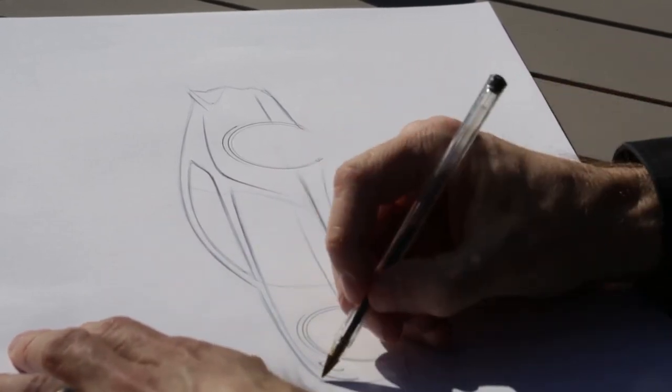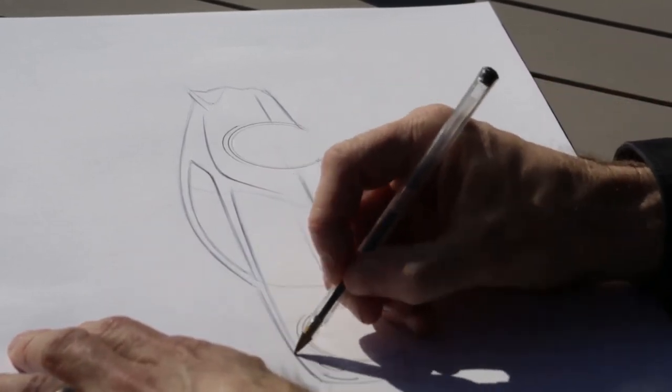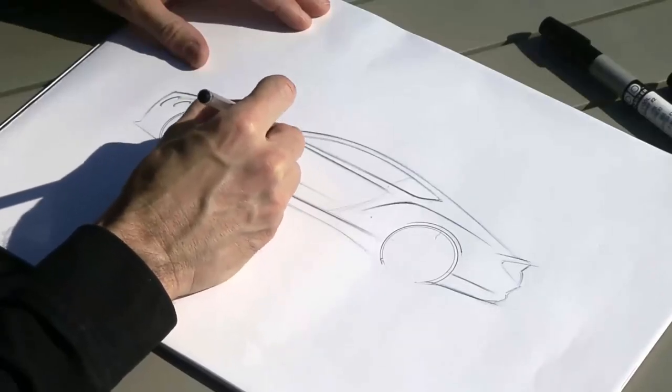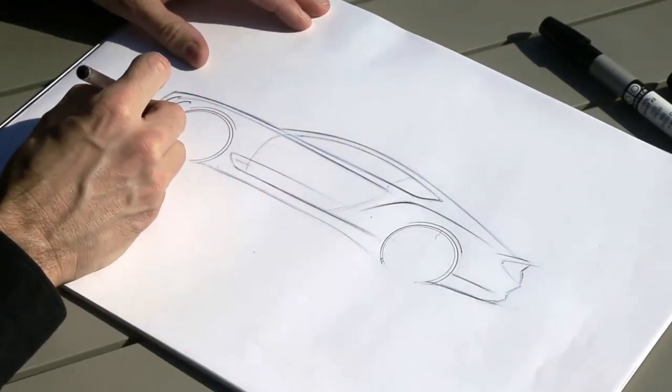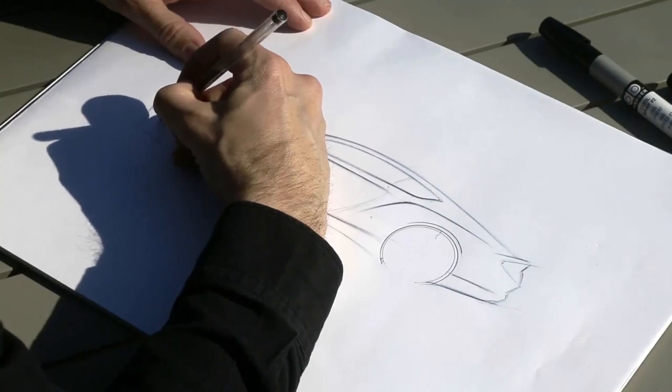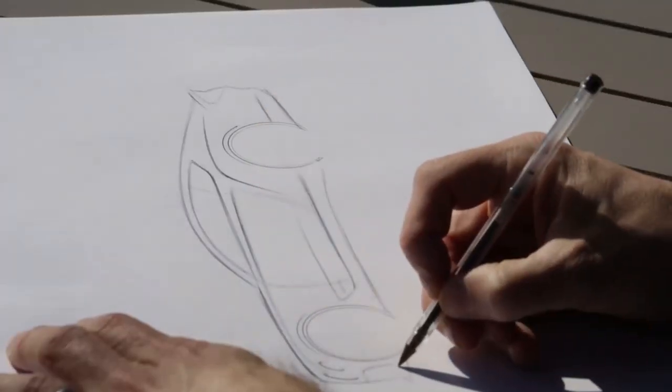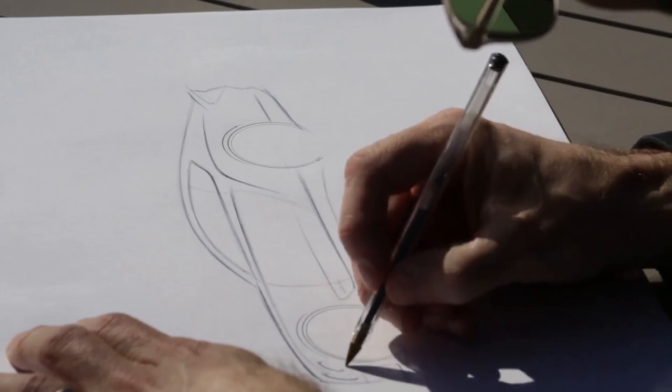You can draw our famous twin round lights and then the lower grill intake.